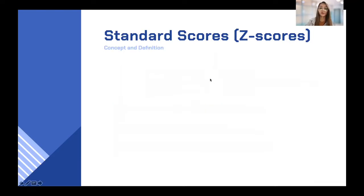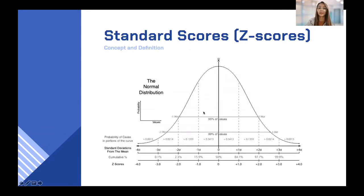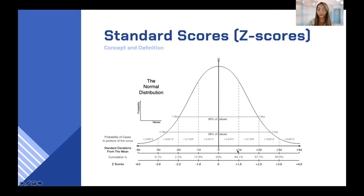Here is an illustration to help you understand more about standard scores. We have a bell-shaped graph, or a normal distribution graph. Here is the standard deviation from the mean — the mean is at the center — and we have positive 1, 2, and 3 times the standard deviation. We also have the cumulative percentage.